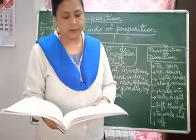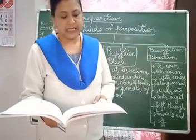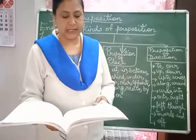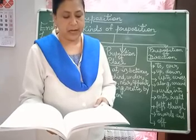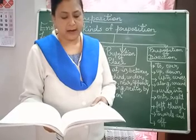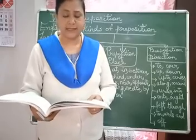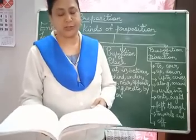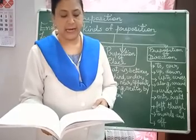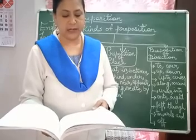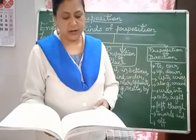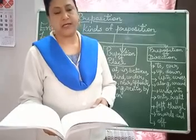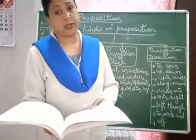Frequently confused prepositions — since and for. Since tells us the moment of time when an action begins. For tells us the duration of action — how long it lasted. For example: I have not seen him since last night — 'since' tells the time. I have not seen him for four days — 'for' tells the duration. They have known each other since childhood — moment of time. They have known each other for 30 years — duration of action.